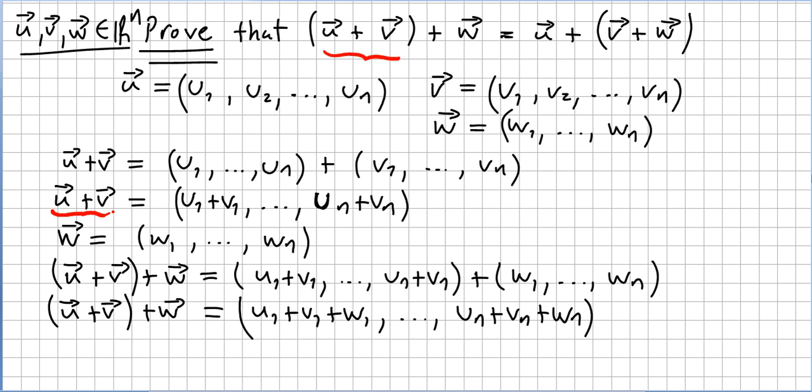So u plus v will be u1 plus v1. Check the previous videos. Addition is defined as component addition. So, u1 plus v1 till un plus vn.